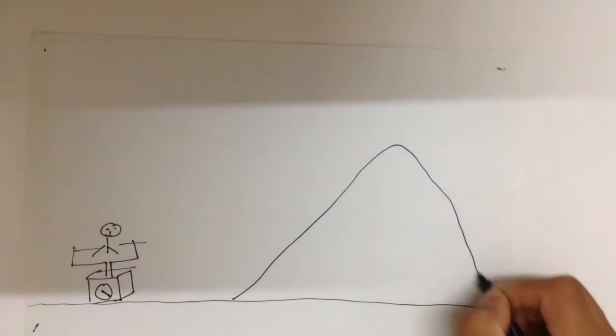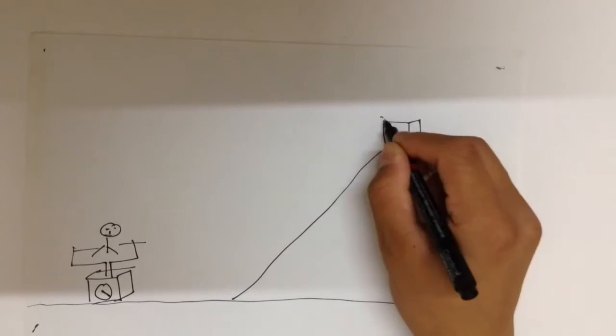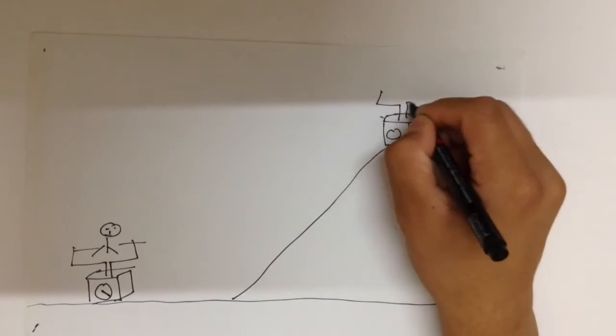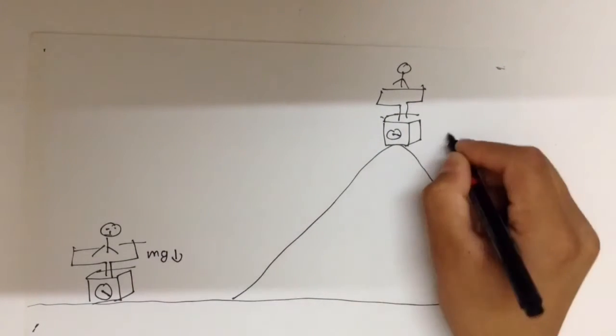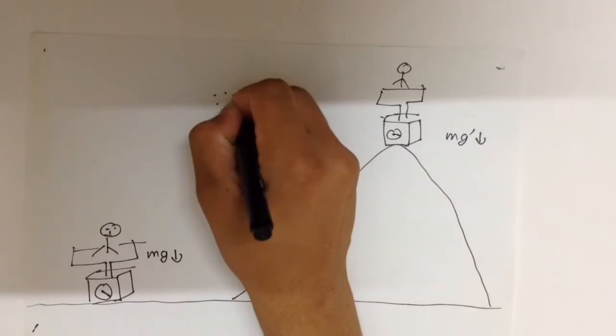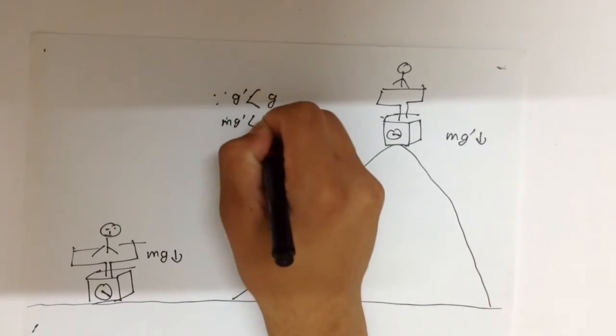Consider two scenarios. In the first scenario, you are on the ground near sea level, and in the second scenario, you are on top of a mountain. In the first case, your weight is Mg, and in the second case, your weight would be Mg'. Since the mountain is on a higher altitude, g' would be less than g, making your weight on mountain less than on ground.